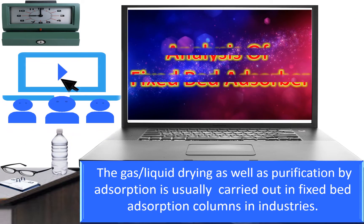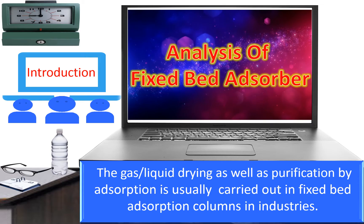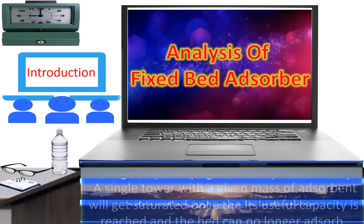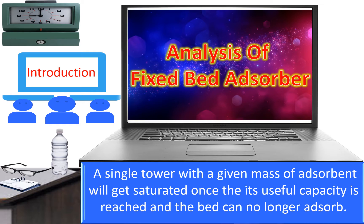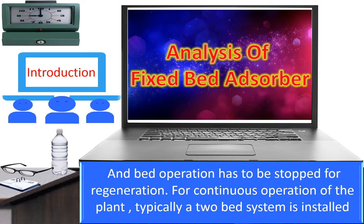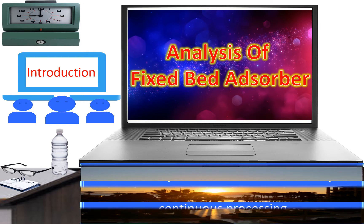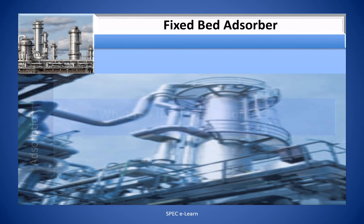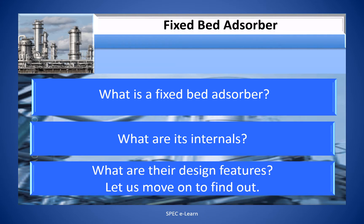The gas or liquid drying as well as purification by adsorption is usually carried out in fixed-bed adsorption columns in industries. A single tower with a given mass of adsorbent will get saturated once its useful capacity is reached, and the bed can no longer adsorb and bed operation has to be stopped for regeneration. For continuous operation of the plant, typically a two-bed system is installed so that the system works on a time-based cycle, thereby meeting the plant requirement of continuous operation. What is a fixed-bed adsorber, what are its internals, and what are the design features? Let us move on to find out.